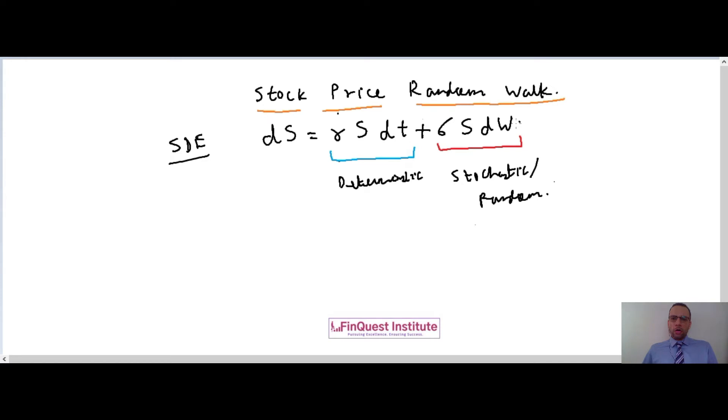The first portion, why we call it as deterministic? Because all of the terms here are known. The risk-free rate is known and that is visible in the market. Stock price, I know the stock price as of right now, so that way stock price is also a known quantity. And dt is a time step, so this time step is something which I am going to decide based on my model. There is no uncertainty as to this portion, so that's the reason why it's also called as a deterministic portion.